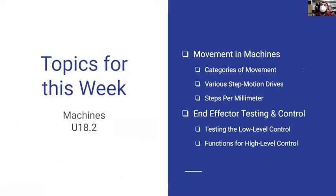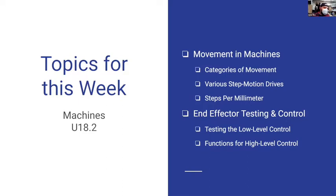Our topics today: we're going to go through movement and machines. We'll categorize movement into a few different types of motion, then look at step motion drives — which I know doesn't quite apply to the garden project. We'll do time-based motion if you stick to peristaltic pumps, which is related but not quite the same. Then we'll talk about steps per millimeter, which works for every single one of our CNCs throughout the space. Then we'll cover end effector testing.